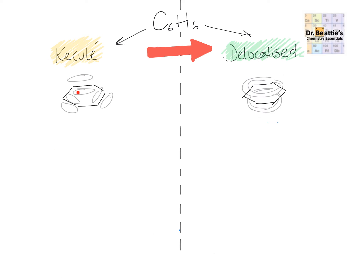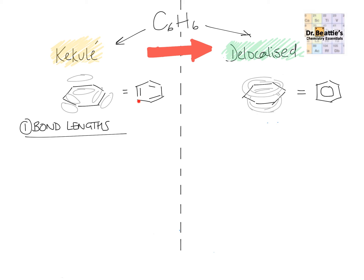In simplified structures, we've got pi bonds that are localized in the Kekulé system, but in the delocalized structure the carbon ring shows a pi system above and a pi system below. These are the skeletal views of both structures. The first piece of evidence we're going to look at is bond lengths. In the Kekulé structure, you would expect three C-C single bonds with a bond length of 0.154 nm, and three C=C double bonds with a bond length of 0.134 nm — shorter because there's a stronger bond so the atoms are more attracted and get closer together.